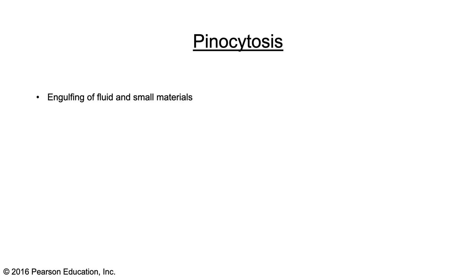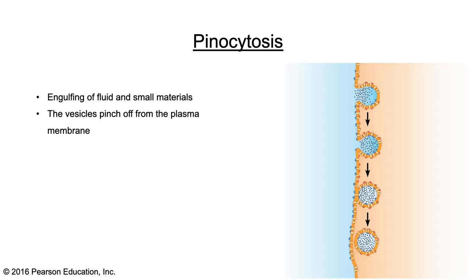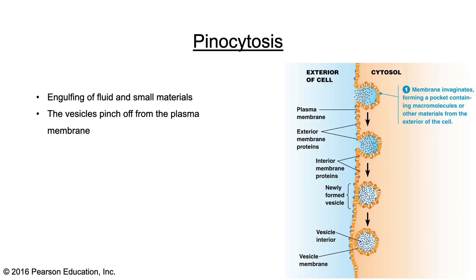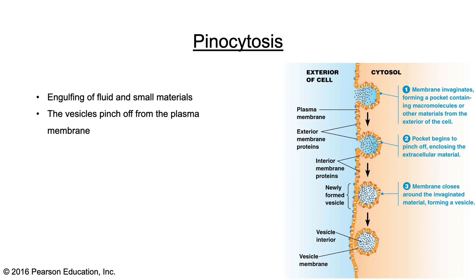Pinocytosis is the engulfing of fluid and small materials — the vesicle pinches off from the plasma membrane. As the vesicle fills, the membrane invaginates forming a pocket containing macromolecules and other materials from the cell exterior. A pocket begins to pinch off, enclosing the extracellular material, then the membrane closes around the invaginated material to form a vesicle. The vesicle separates from the plasma membrane, carrying material from the exterior within a membrane derived from the plasma membrane.